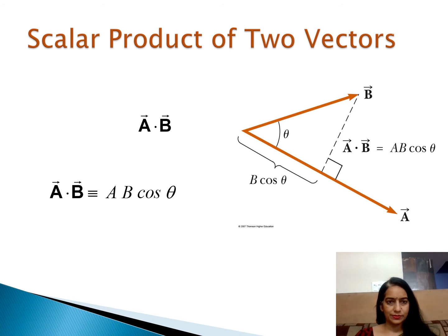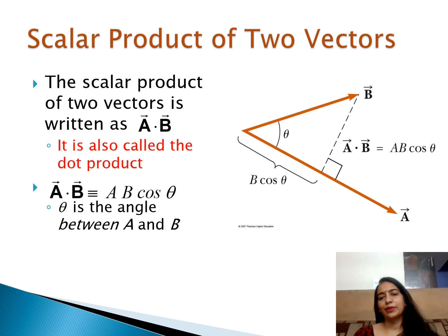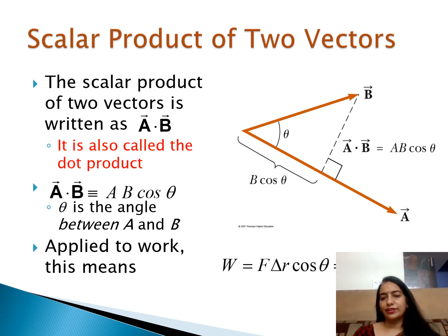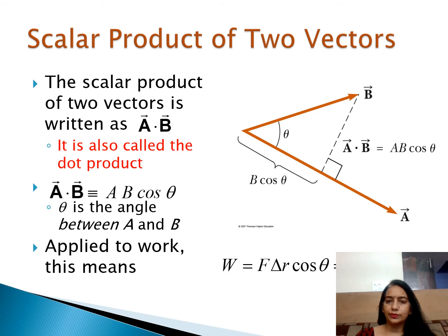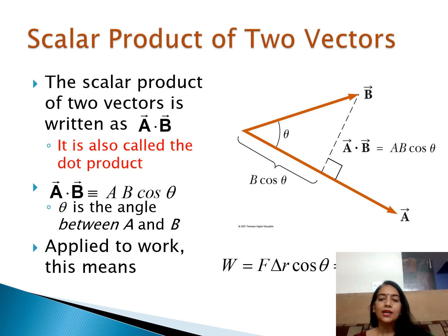The scalar product of two vectors: draw vector a, and the projection of vector b gives a dot b equals ab cos theta. This is also called the dot product. An important application is work: W equals F · Δr cos theta, or simply F dot Δr. If the angle between force and displacement is zero, work done is maximum. As the angle increases, the work done decreases.